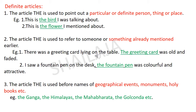The article 'the' is used to refer to someone or something already mentioned earlier. For example: there was a greeting card lying on the table — the greeting card was old and faded. The greeting card already mentioned. Similarly: I saw a fountain pen on the desk — the fountain pen was colorful and attractive. We are already talking about the fountain pen which was on the desk.